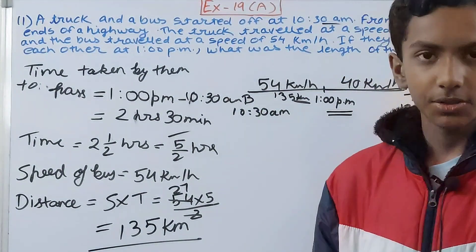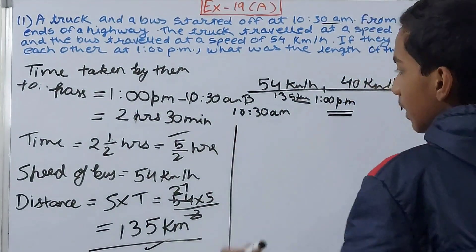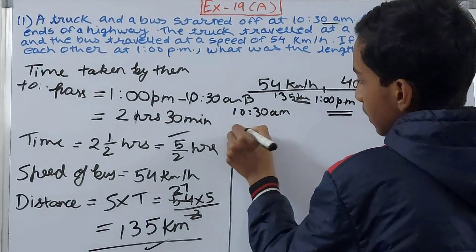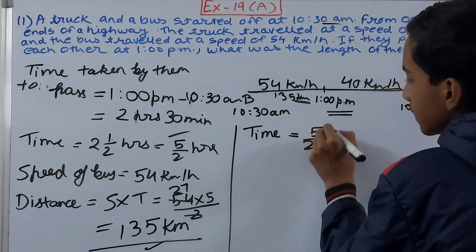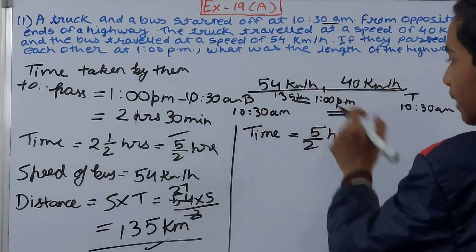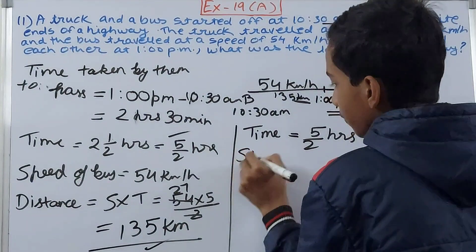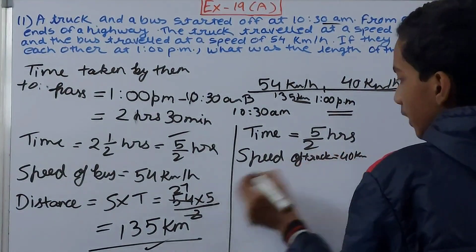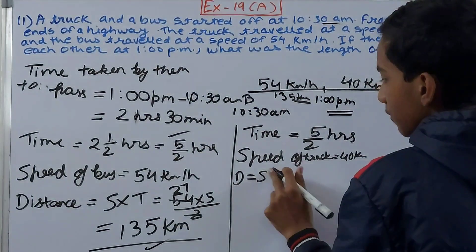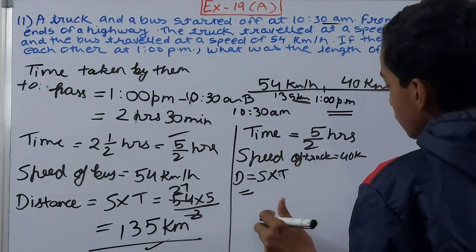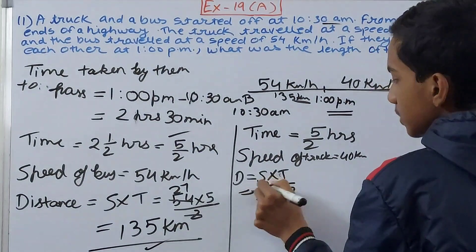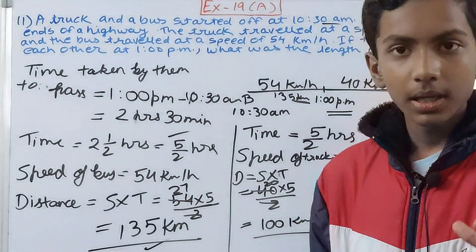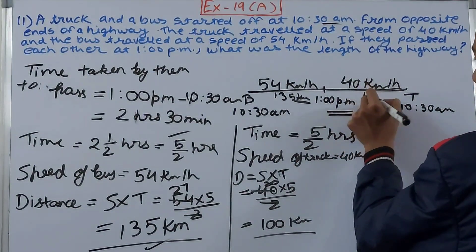Now let's find the distance the truck has traveled. The time for the truck is the same — 5/2 hours — because both started at the same time and passed each other at the same time. Speed of truck = 40 km/h. Distance = 40 × 5/2. Canceling gives 20 × 5 = 100 kilometers. So the truck traveled 100 kilometers.